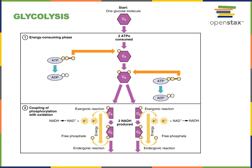The first phase of glycolysis is the energy-consuming phase, which will consume two molecules of ATP in order to fuel endergonic chemical reactions. Following the energy-consuming phase, coupling of phosphorylation with oxidation will transfer high-energy electrons onto the oxidizing agent NAD+, forming the high-energy electron carrier molecule NADH.